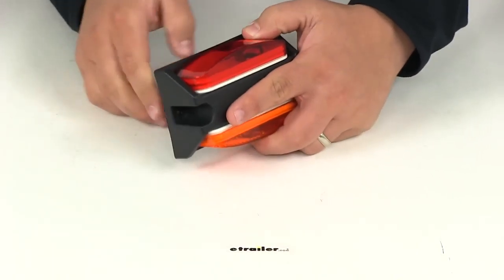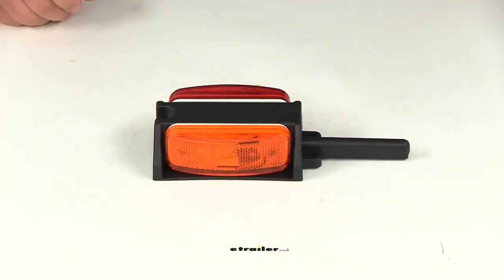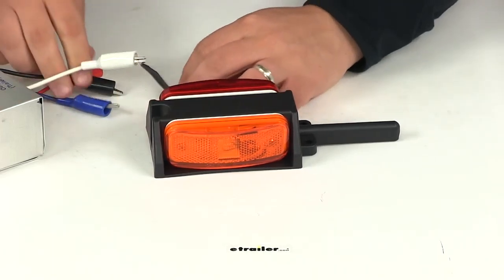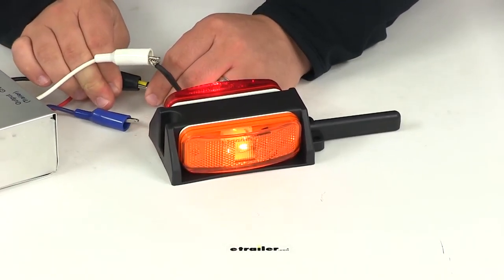We're going to hook this up to our external power source so you can see what it looks like with power running to it. We'll go ahead and make our ground connection, then we'll connect our power wire.